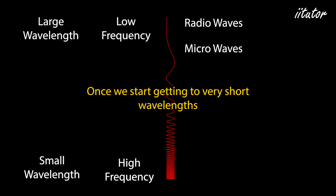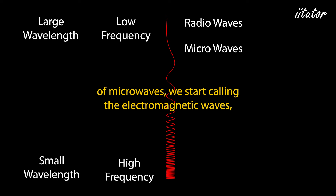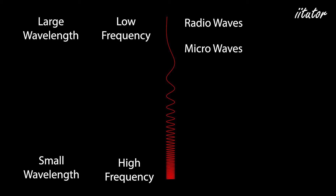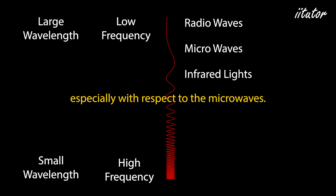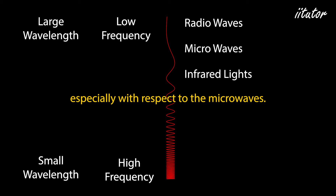Once we start getting to very short wavelengths of microwaves, we start calling those electromagnetic waves infrared light, which will have quite a small wavelength, especially with respect to microwaves.